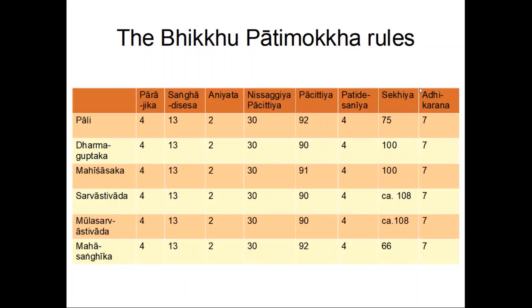Sekhiyas are basically table manners and questions of etiquette, whereas Parajikas are very serious — if you break a Parajika rule you must disrobe immediately and cannot ordain again in this life. All schools have four Parajika rules, and not only do the numbers agree, the content is the same across all Patimokkhas. This well-preserved agreement points to these rules stemming from the early period of Buddhism.